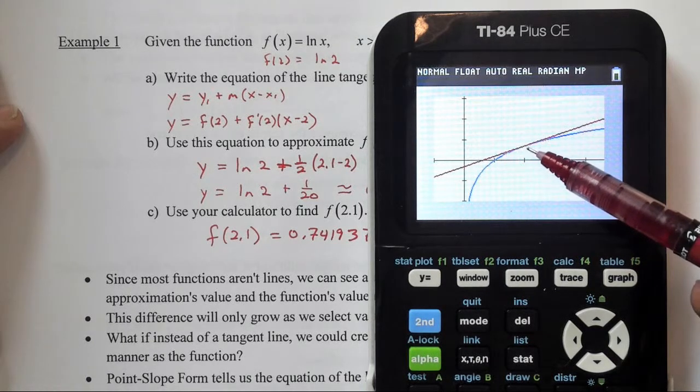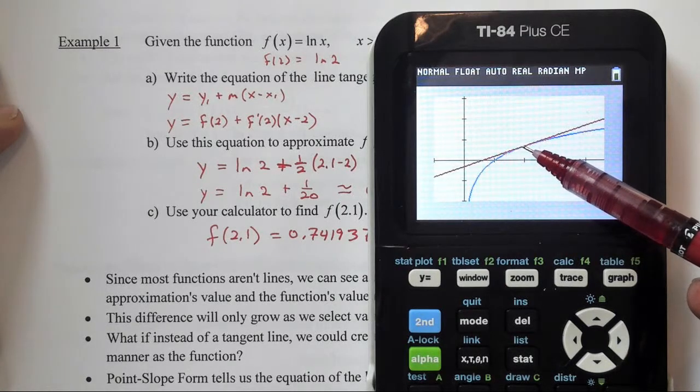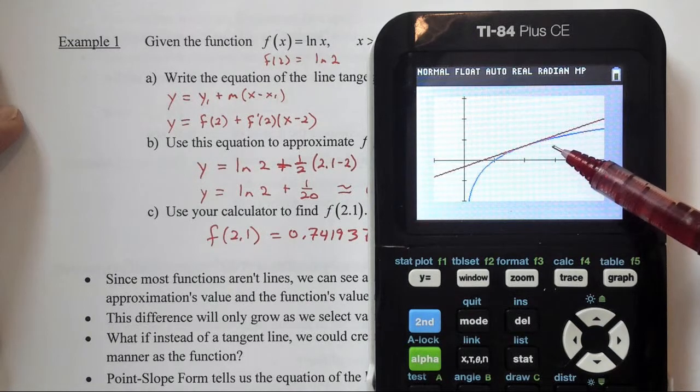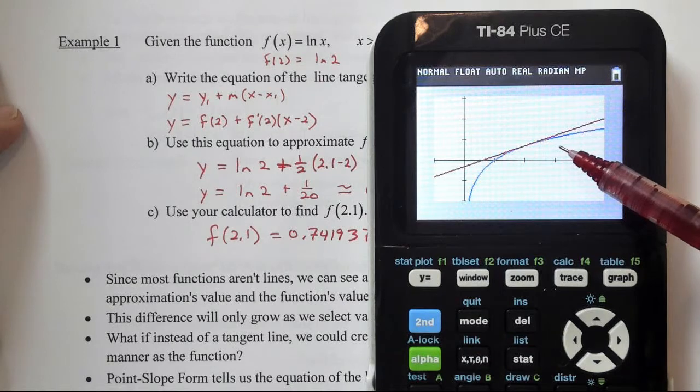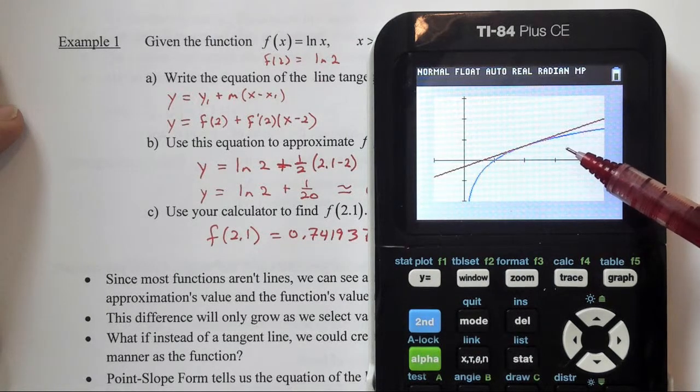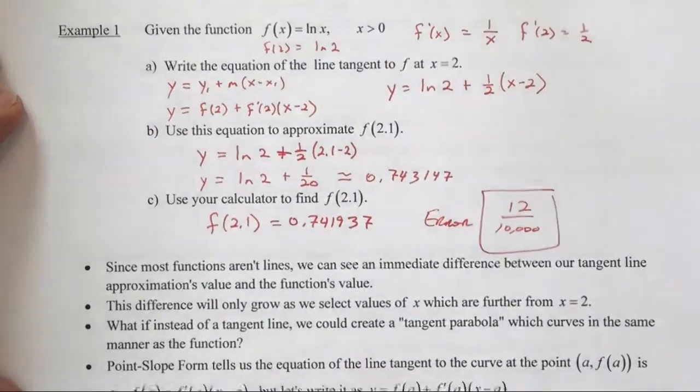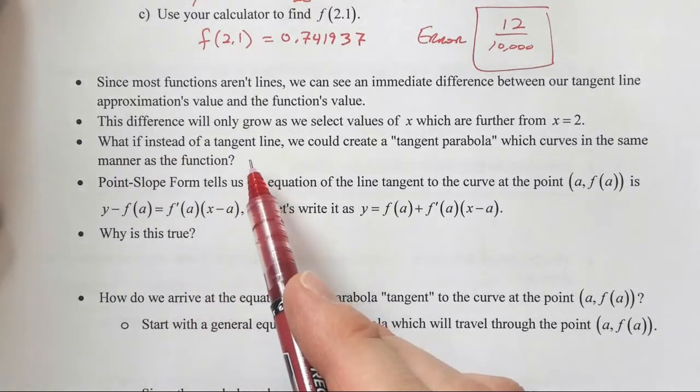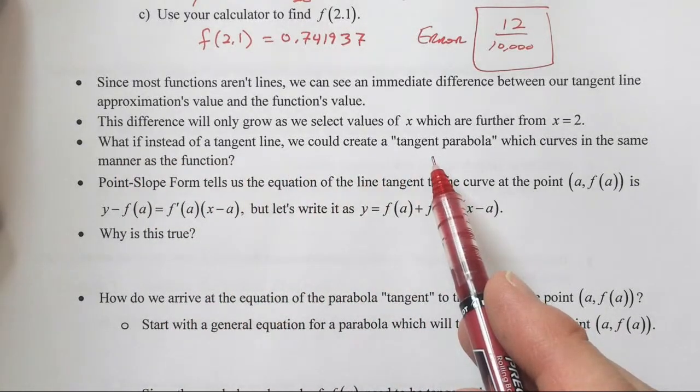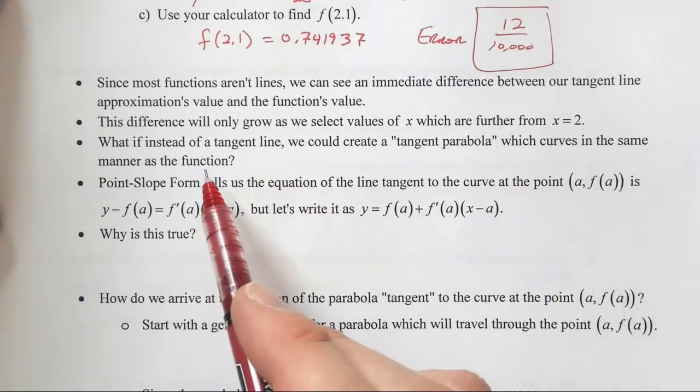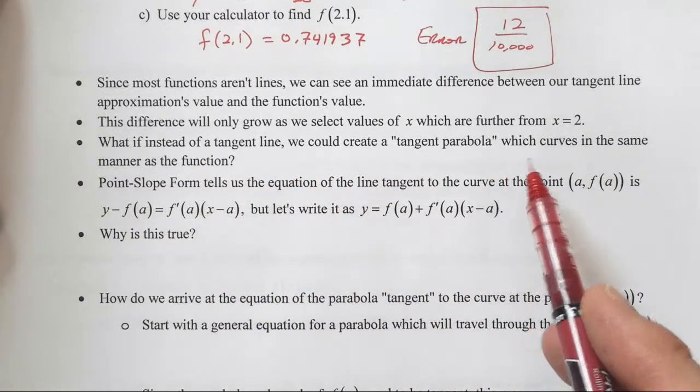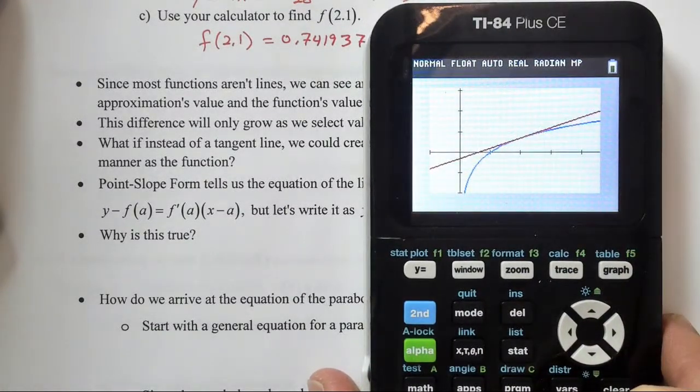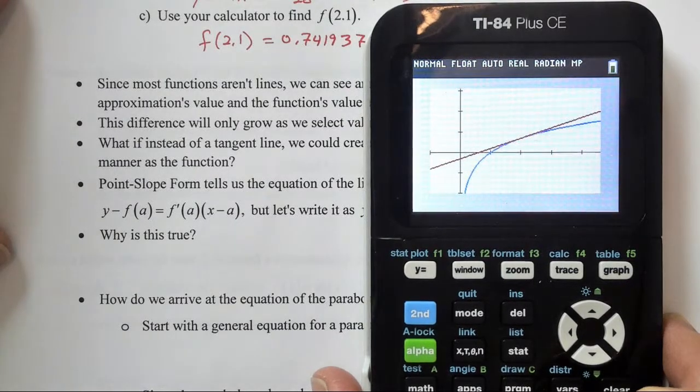Now, this is great if we're interested in exactly the point x equals 2, but could it be that we could make a more accurate or create a more accurate representation of this natural log curve while using a polynomial? That's basically what we're looking at with these bullet points right here. Check out the third one. What if instead of a tangent line, we could create a tangent parabola, which curves in the same manner as the function? That would give us a situation where it would be even more accurate than our tangent line. So, in the next video, let's see if we can come up with a tangent parabola.